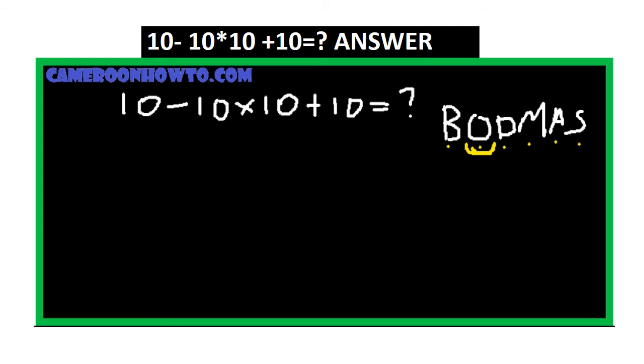So the first thing I'll solve here is there is no bracket. You need to follow the order of operation. The next thing I'm supposed to do is division, so there is no division in this expression. So the next thing I'm going to put my focus on is multiplication.